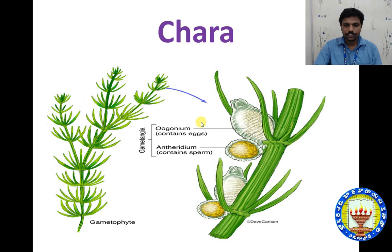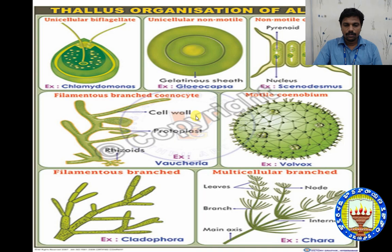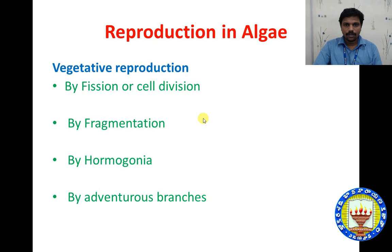Chara shows the oogamous type of reproduction because oogonium and antheridium appear on the same plant. This is Volvox and Spirogyra.